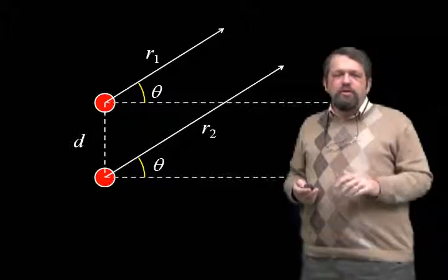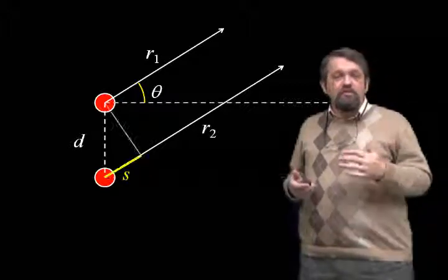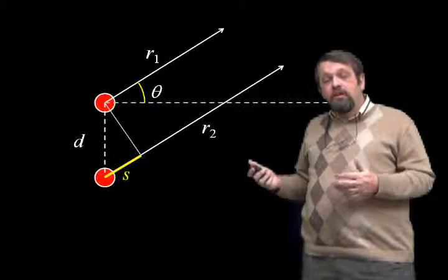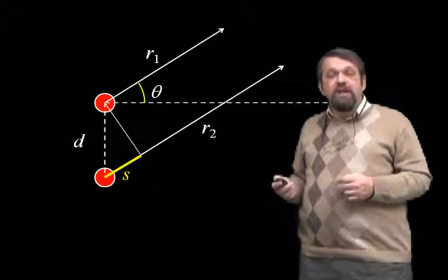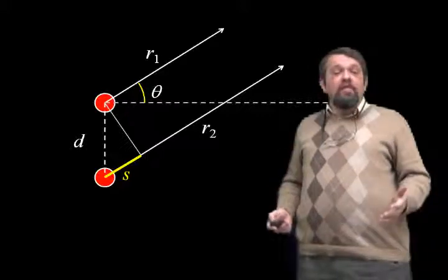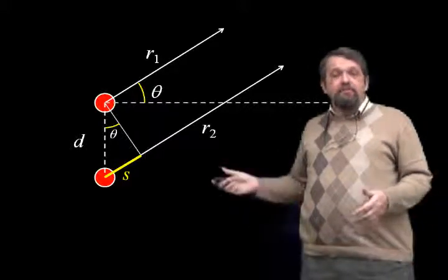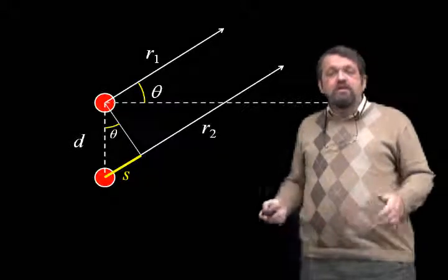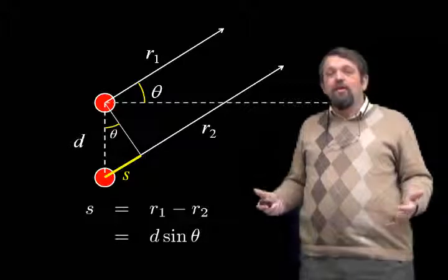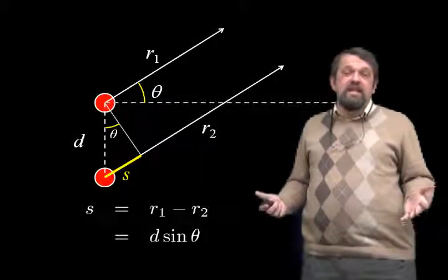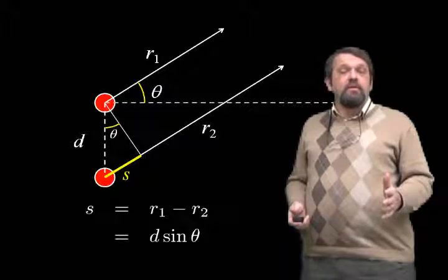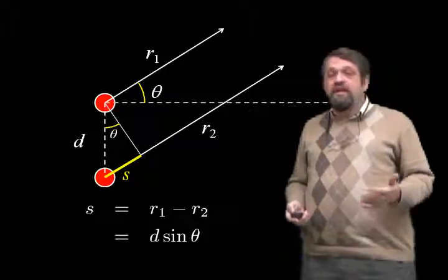Since these lines are essentially parallel, we can form a right triangle, as I've shown here. One of the legs, which I've marked S, is actually the difference between R1 and R2. The angle in that triangle is the same as the angle theta from the horizontal in the diagram. So the net result is that difference S — equal to R1 minus R2 — can also be written as d times the sine of this angle, the deflection from the horizontal in the diagram.